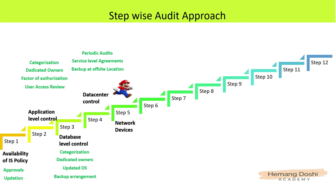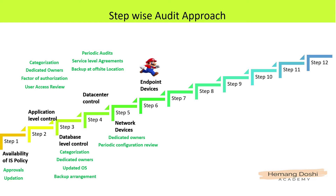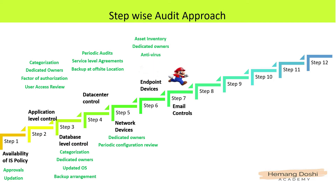Step 5 is about auditing the controls related to network devices. As an auditor, you need to check whether the device is owned by a dedicated owner and whether the device configuration is reviewed at periodic intervals. Step 6 is about auditing the controls related to endpoint devices like computers, laptops, tablets, and mobile devices. You need to check whether an asset inventory is maintained and updated, and whether each endpoint device is owned by a dedicated owner.